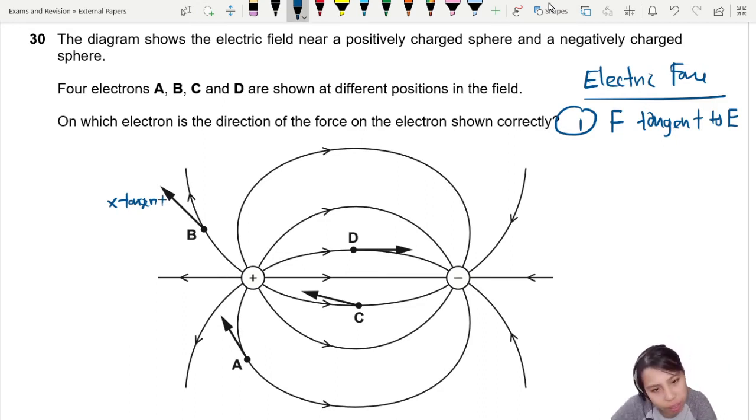Let's look at A. Is it tangent at that point? Looks kind of... if I draw, if I extend the line backwards, it looks okay. Looks okay.